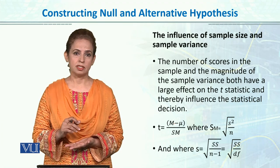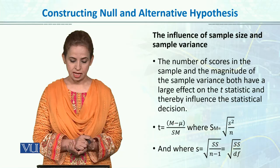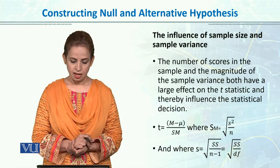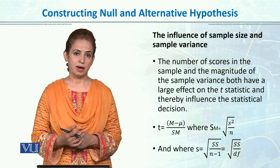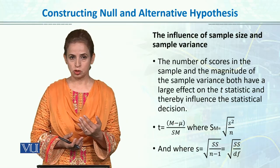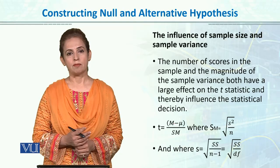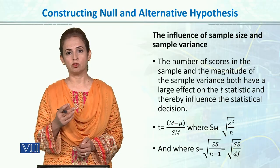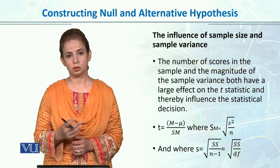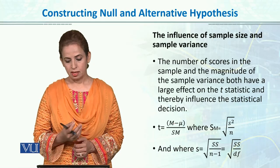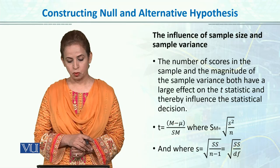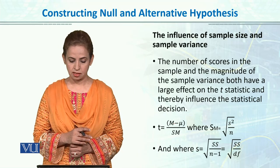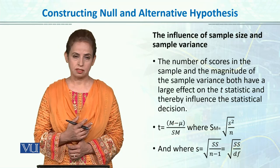T-Test ke anndar, sample size badi important hai, aur sample size ka influence or effect hai. Jiasae jiasae humara sample size increase hota jata hai, humari jiasa amni abhi baat ki ki ki, we approach to normal distribution, humari T-statistic ki value badi hoti jaati hai, and that approaches significance. The number of scores in the sample and the magnitude of the sample variance both have large effect on T-statistic and thereby influence the statistical decision.